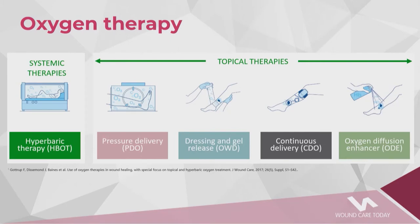Various types of oxygen therapy already exist. Hyperbaric oxygen therapy enhances the body's natural healing via inhalation of 100% oxygen in a total body chamber with controlled increased pressure. There's a pressure delivery system using simple plastic tubing placed around the limb with a constant pressure maintained. There are oxygen wound dressings where oxygen is embedded in a dressing — usually a hydrogel — and released by a chemical reaction. There's also a device delivering continuous oxygen through a small cannula to an occlusive wound dressing.